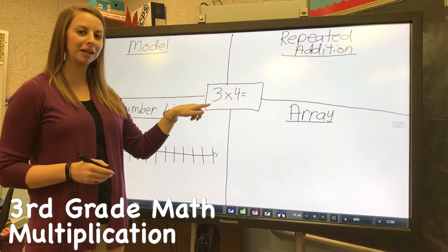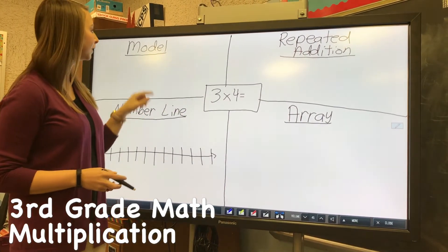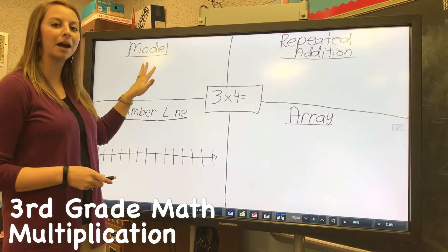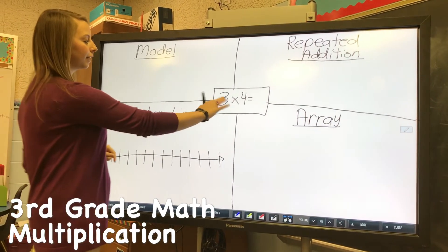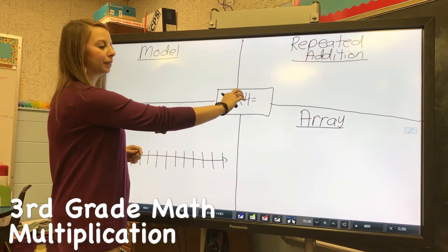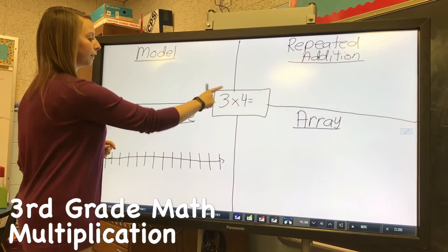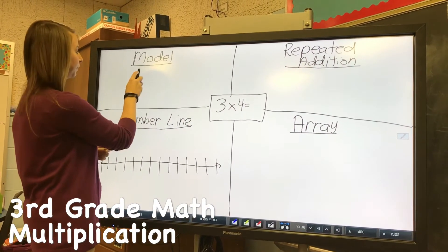So we're going to be solving the problem 3×4, and the first way we're going to do it is by a model. If you think of it as three groups and four in each group, the first number would be the number of groups.